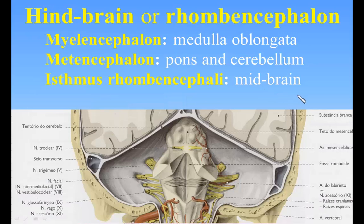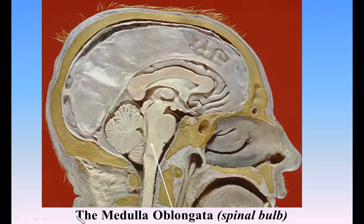The hindbrain, or rhombencephalon, occupies the posterior fossa of the cranial cavity and lies below a fold of dura mater, the tentorium cerebelli. It consists of: a. The myelencephalon, comprising the medulla oblongata and the lower part of the fourth ventricle; b. The metencephalon, consisting of the pons, cerebellum, and the intermediate part of the fourth ventricle; and c. The isthmus rhombencephali, a constricted portion immediately adjoining the midbrain and including the superior peduncles of the cerebellum, the anterior medullary velum, and the upper part of the fourth ventricle.